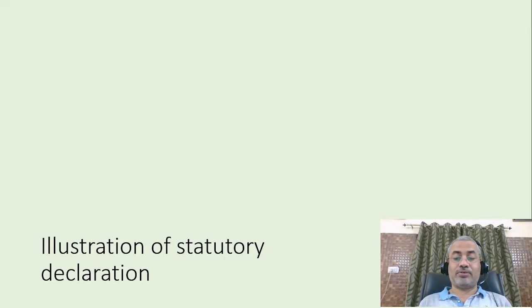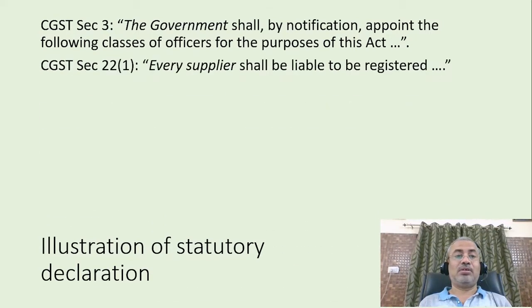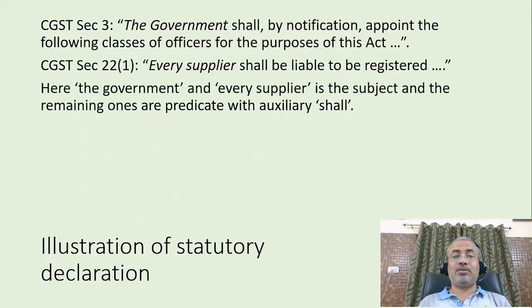Illustration of a statutory declaration. CGST section 3 says: the government shall by notification appoint the following classes of officers for the purposes of this act. CGST section 22 subsection 1 says: every supplier shall be liable to be registered. Here, the government and every supplier is the subject, and the remaining ones are the predicate with auxiliary 'shall'.